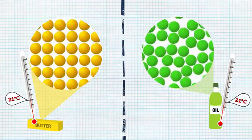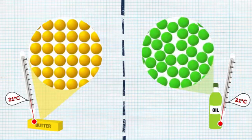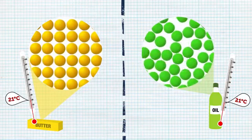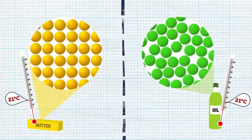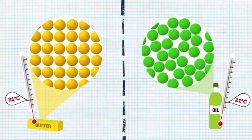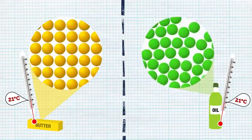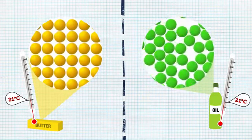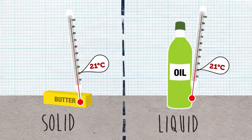The difference is that the molecules in the liquid oil are moving more freely than the molecules in the solid butter. In the solid, the molecules are moving in place. But in the liquid, they are moving around each other. The difference in movement is the reason why the two substances are in different phases at the same temperature.